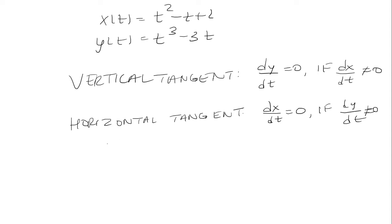So clearly we need to take the derivatives of both x and y with respect to t. The derivative of x with respect to t is 2t minus 1 and the derivative of y with respect to t is 3t squared minus 3.